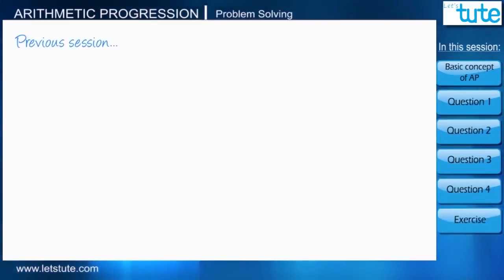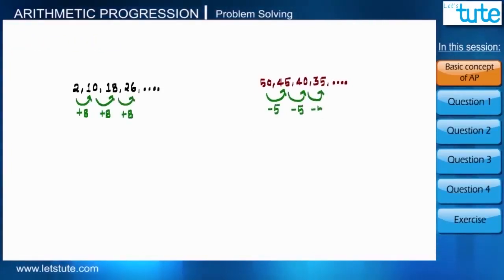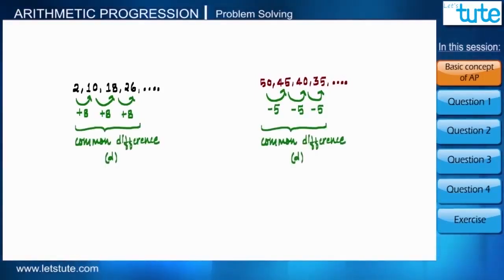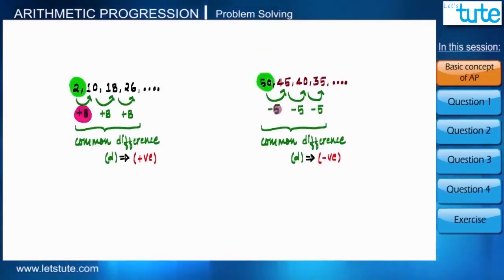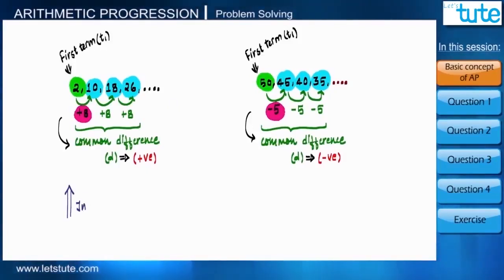In the previous session we learned the basic concept of arithmetic progression, where a sequence of numbers follows AP only if the difference between consecutive numbers is constant, which we call the common difference. This common difference may be positive or negative. Starting from the first term, we keep adding the common difference to get the next number. If the sequence is increasing, the common difference is positive, and if decreasing, it is negative.